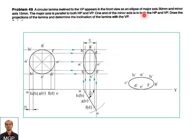One end of the minor axis is in both HP and VP. A and E form the minor axis, and G and C form the major axis. The major axis G-C should be parallel to both VP and HP. One end of the minor axis — A and E — should be on both the reference planes, i.e., on the XY line. So E should be on the XY line.